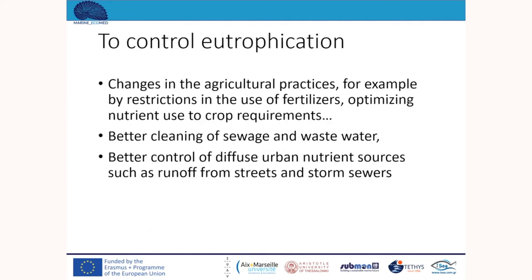Actions to control eutrophication include changes in agricultural practices such as restriction in the use of fertilizers and optimizing nutrient use to crop requirements, better cleaning of sewage and wastewater, and better control of diffuse urban nutrient sources such as runoff from streets and storm sewers.